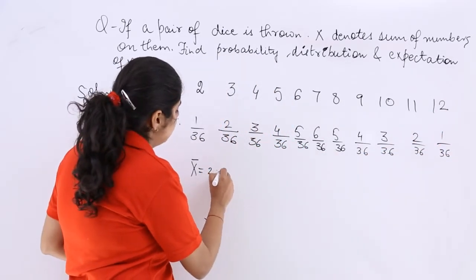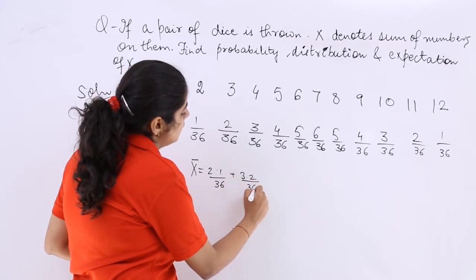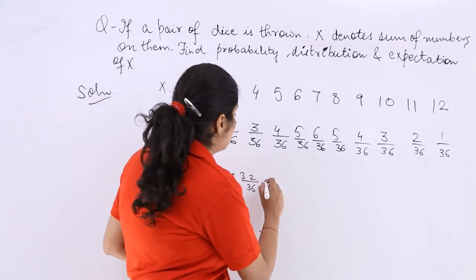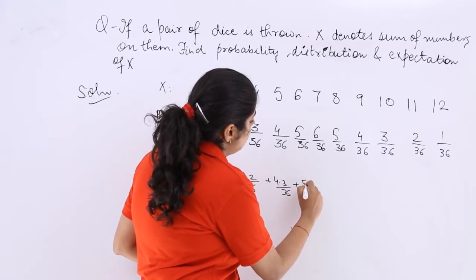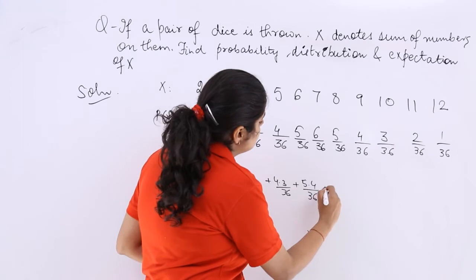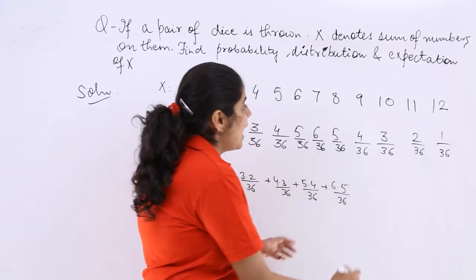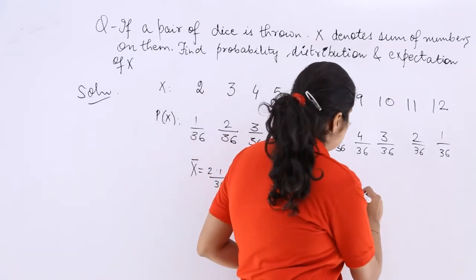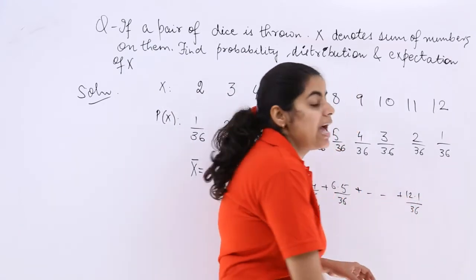This will be 2 multiplied by 1 over 36 plus 3 multiplied by 2 over 36. This is multiplied by 3 over 36 plus 5 multiplied by 4 over 36 plus 6 multiplied by 5 over 36 and so on. You have to write this till 12 multiplied by 1 over 36. And now what you do?